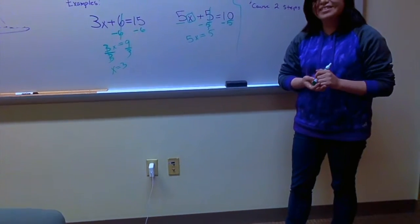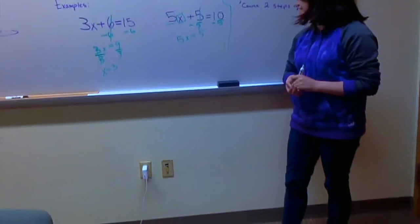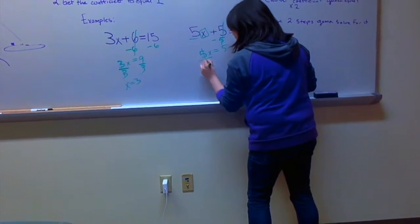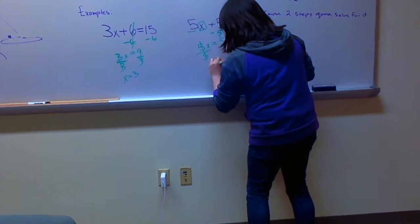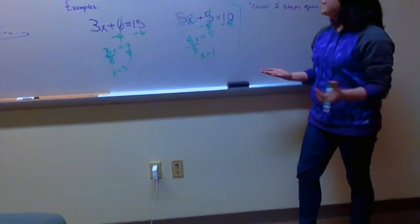So, how do we get x alone? We divide both sides by five. Alright. So, Graciela, can you tell me what x equals? X equals one! Great! Alright.